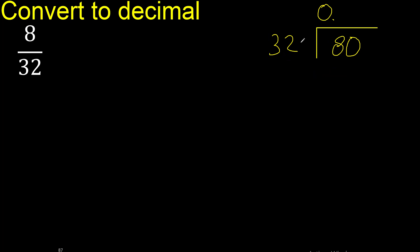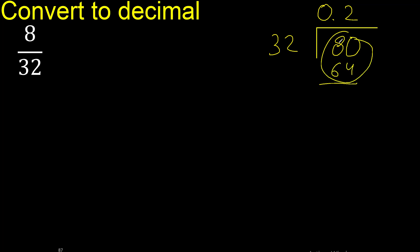32 multiplied by which number is nearest to 80 but not greater? Multiply by 3 is 96 — 96 is greater. Therefore try another number: multiply by 2 is 64. Subtract. There is no number that goes down, therefore complete. Always complete with 0 — point is here.